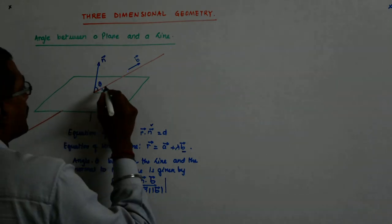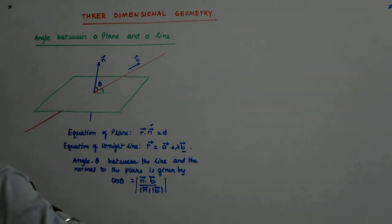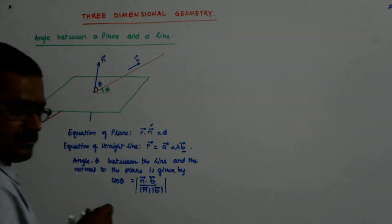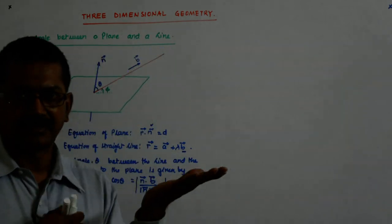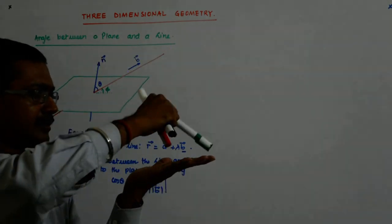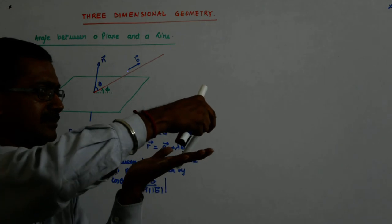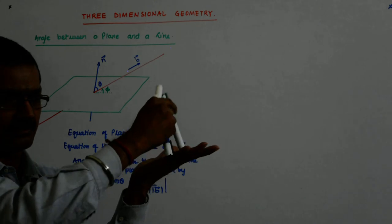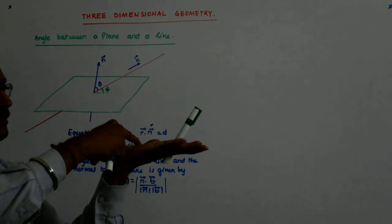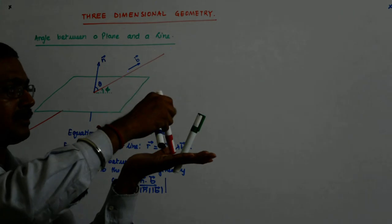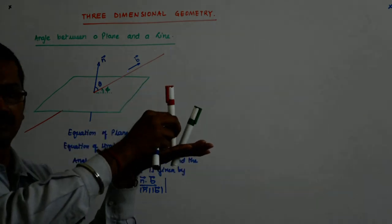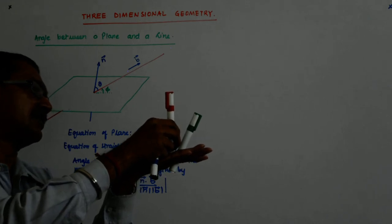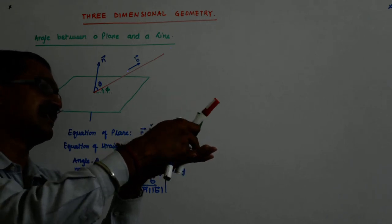Now, the trouble is not that. I want phi actually. I want this phi. If this is the plane and this is the line, I actually want this angle. And this is the normal. This is the normal. I have found out this. What do you think about this and this angle? Any relation?